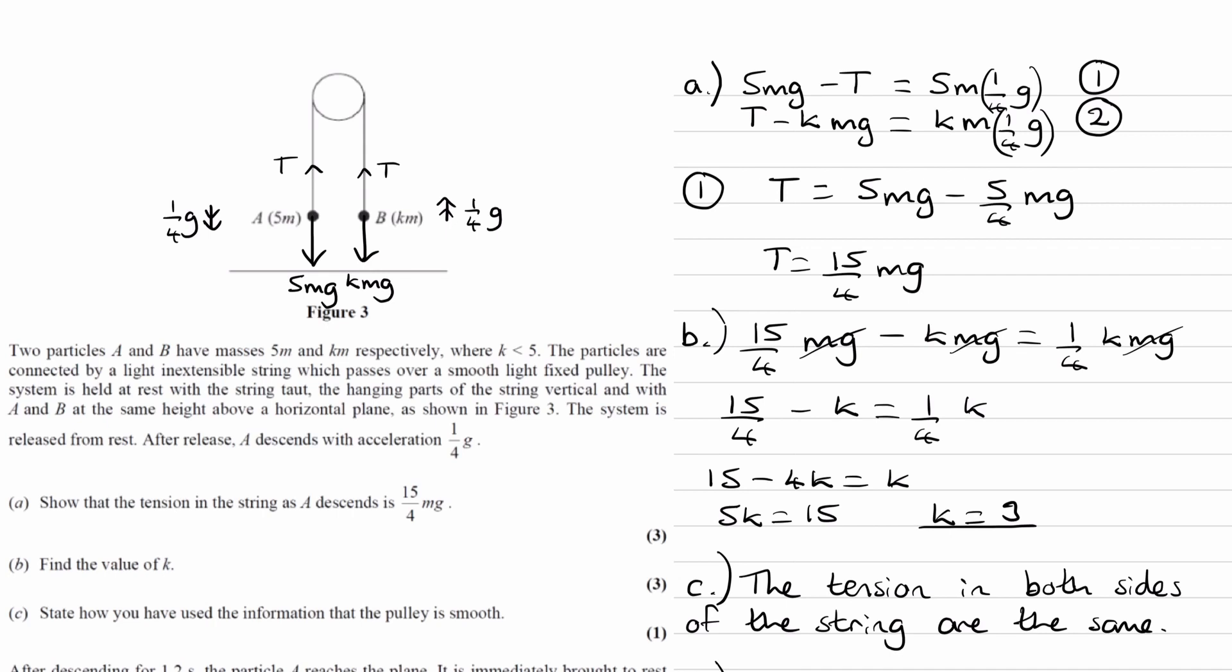When A hits the ground, it's no longer falling, so the string then goes slack. B still has some speed. It still has velocity. Whatever speed that A hit the ground with, that will be the speed that B has at that instant. So it's not going to stop straight away. It will keep moving up and then decelerate until it eventually stops.